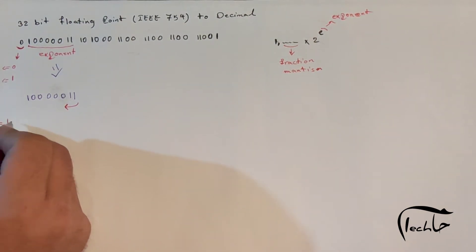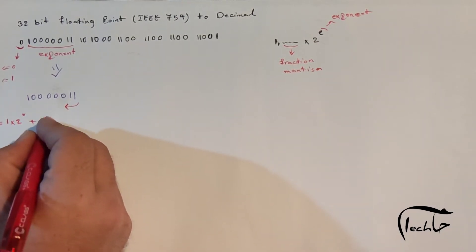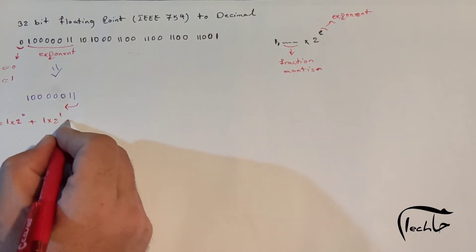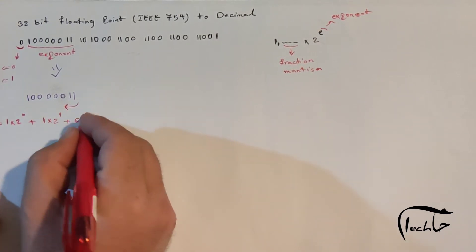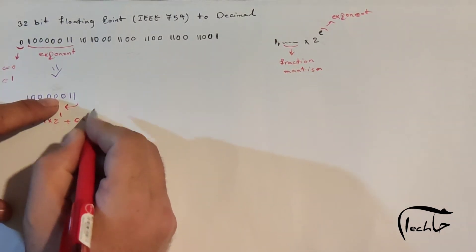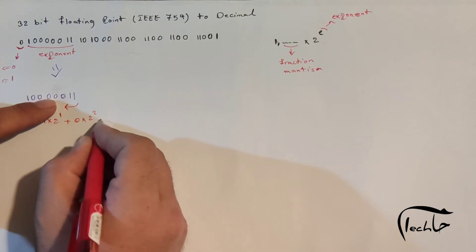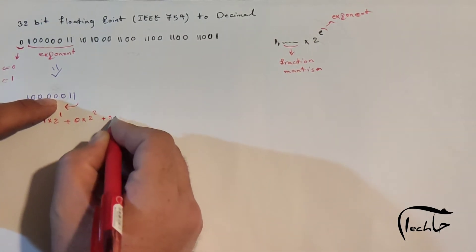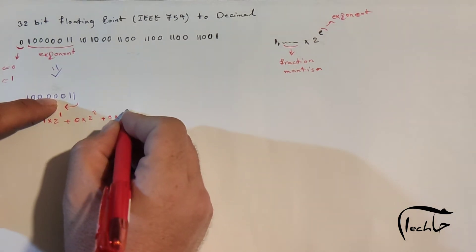And write 1 times 2 power 0, plus 1 times 2 power 1, plus 0 times 2 power 2, plus 0 times 2 power 3.